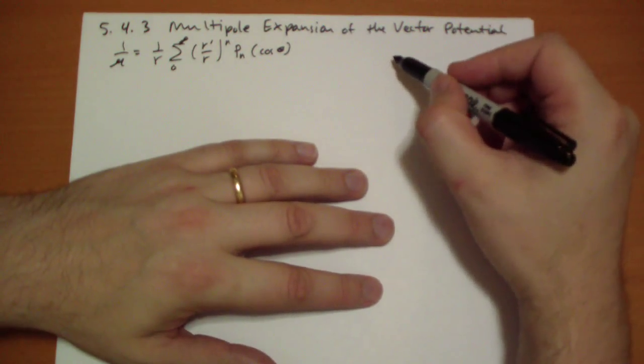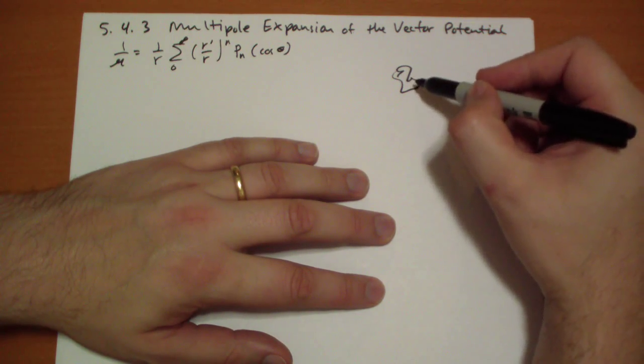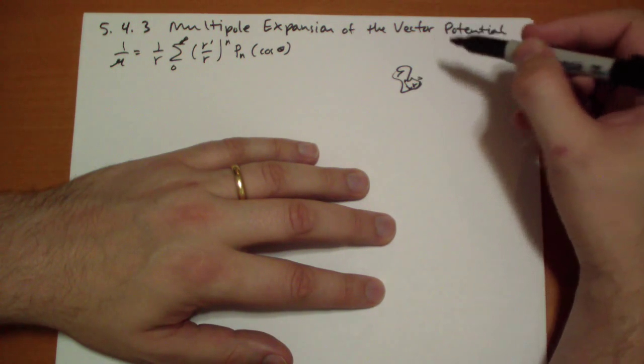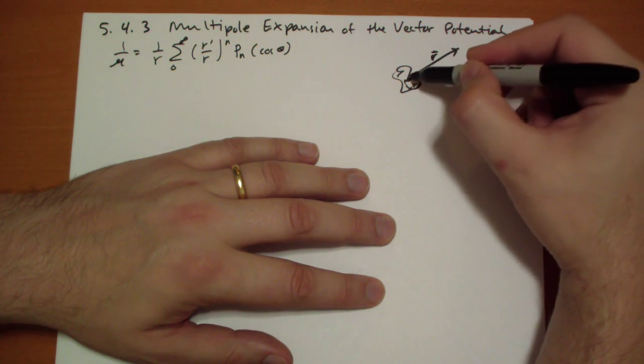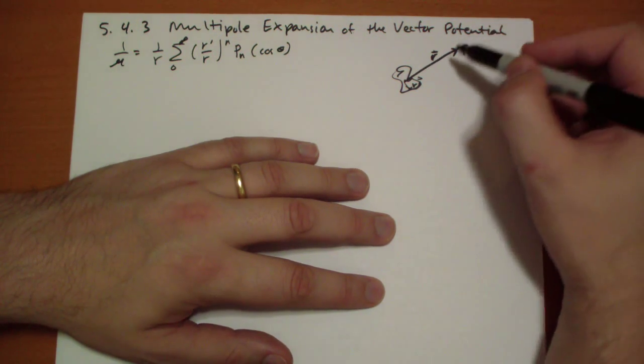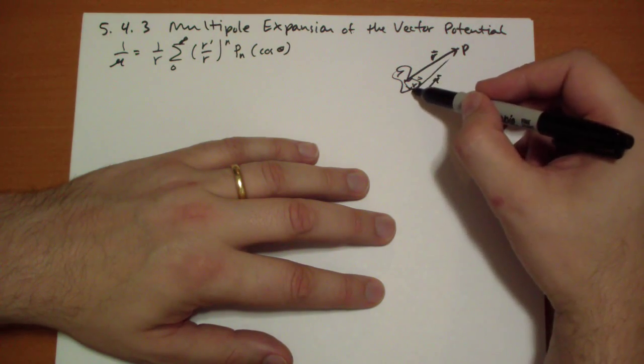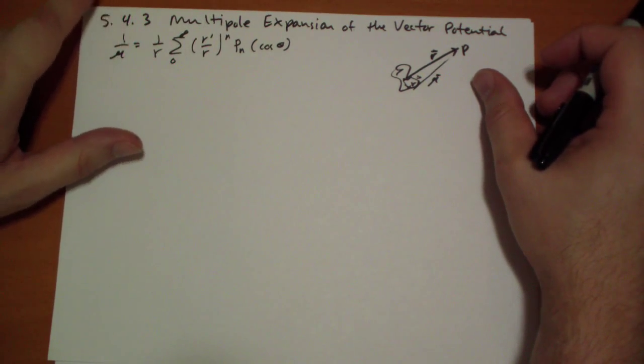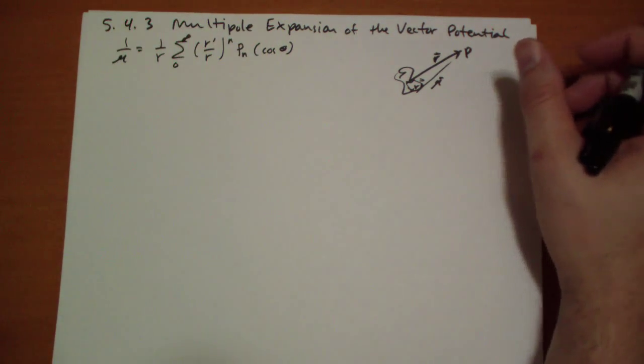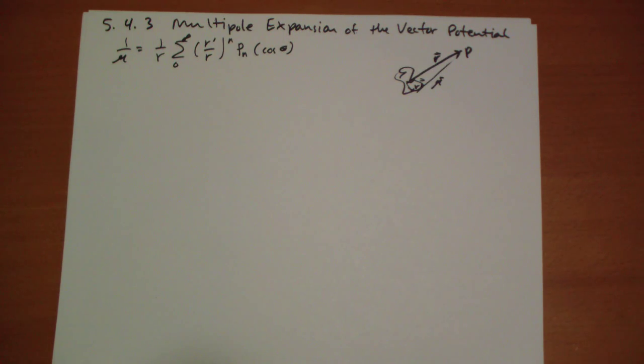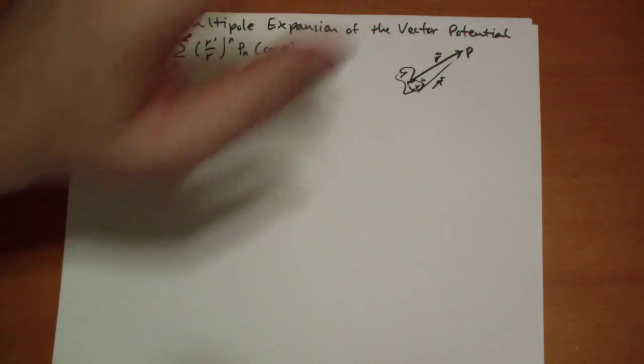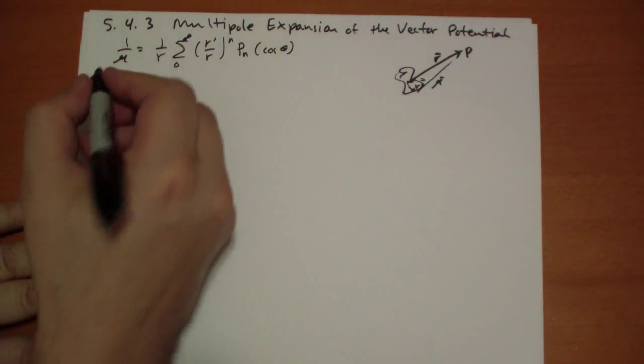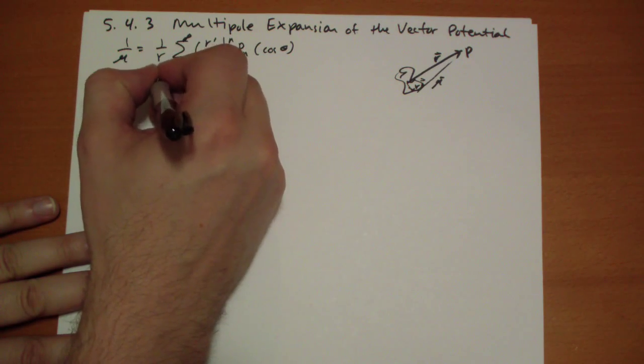So this starts with the theorem that 1 over r script is really equal to 1 over r, the sum from 0 to infinity of r prime over r to the n power, and the Legendre polynomial of cosine theta. Let's draw a picture here. So we have some current charge there. r prime is the vector from the origin to some little current piece. And then r vector is from the origin to the point that we're trying to calculate whatever for. And then this r curly is the vector, the difference between the two.